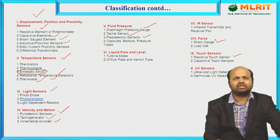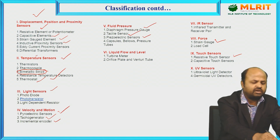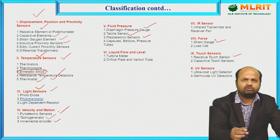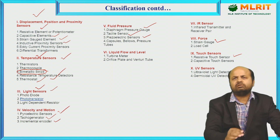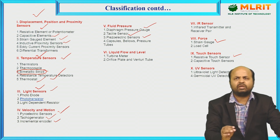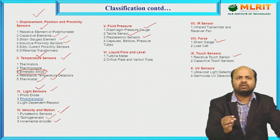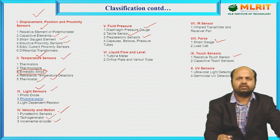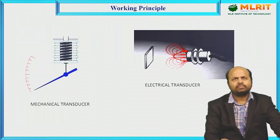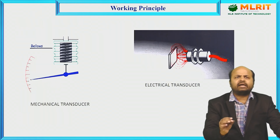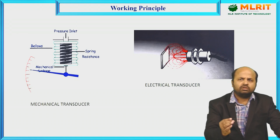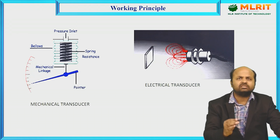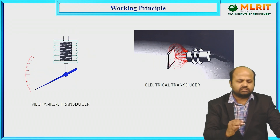The physical quantities measured by transducers may be displacement, temperature, light, velocity, and more. The main objective of a transducer is to measure physical quantities. Now, I would like to discuss the working principle of a transducer — how a transducer works and what is its basic principle.